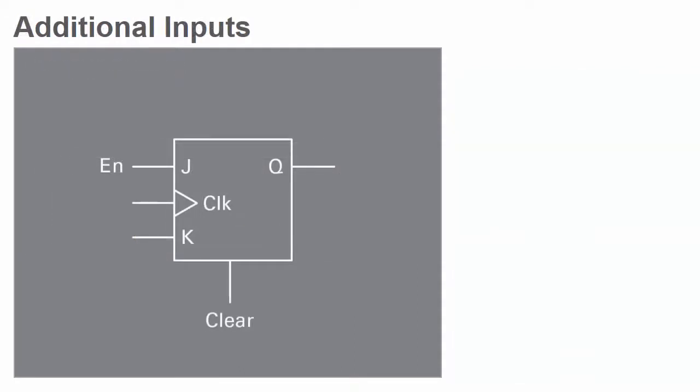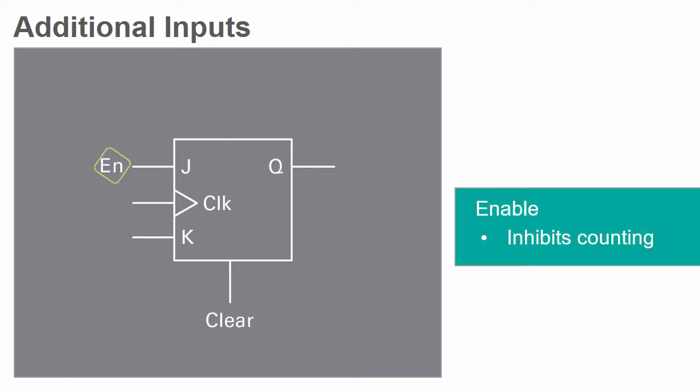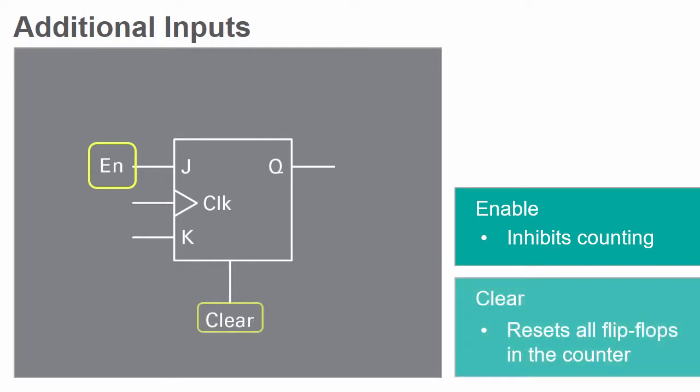Counters usually have two additional inputs, enable and clear. The enable input inhibits counting no matter the clock signal's state. The clear input resets all flip-flops in the circuit regardless of input, returning the count to zero.